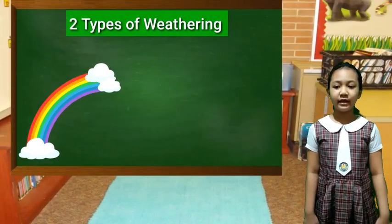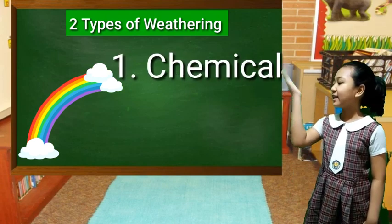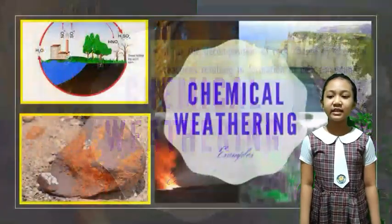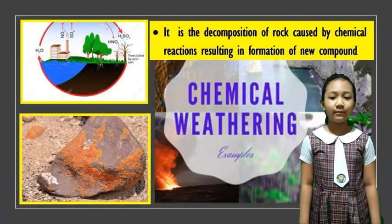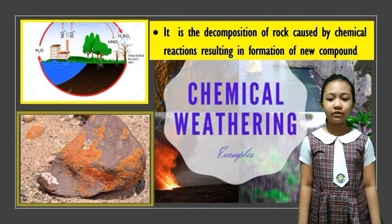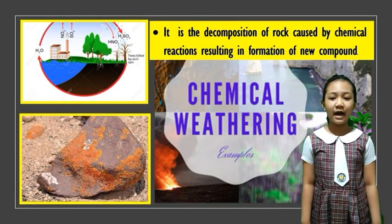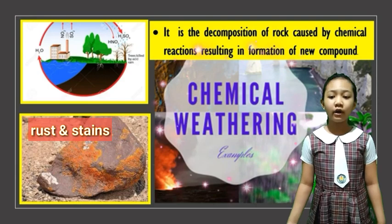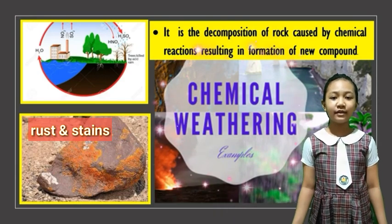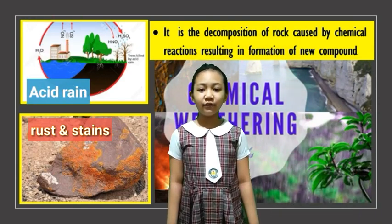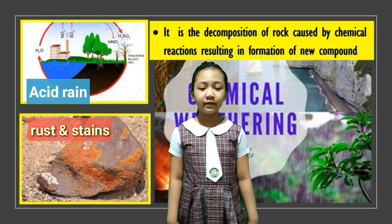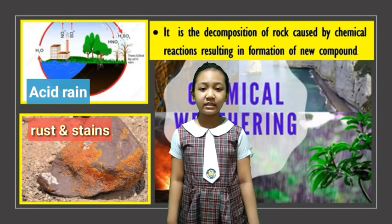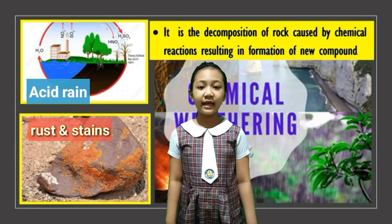There are two types of weathering: chemical and mechanical. First, chemical weathering is the decomposition of rocks caused by chemical reactions resulting in the formation of new compounds. The rust and stains that we observe on some rocks are all caused by chemical weathering. Acids are one of the most reactive chemical weathering agents, like acid rain that slowly wears away buildings, statues, and damages roads and bridges.